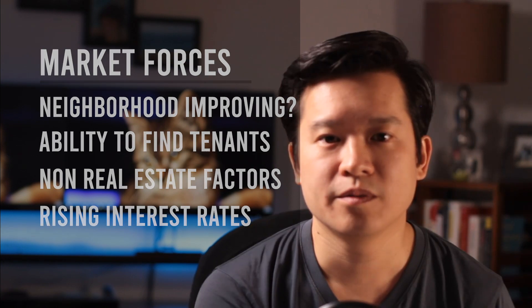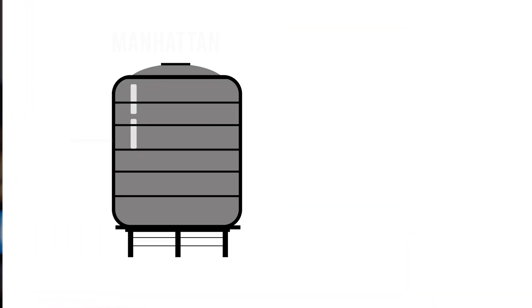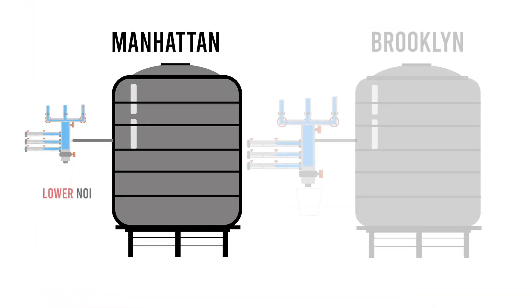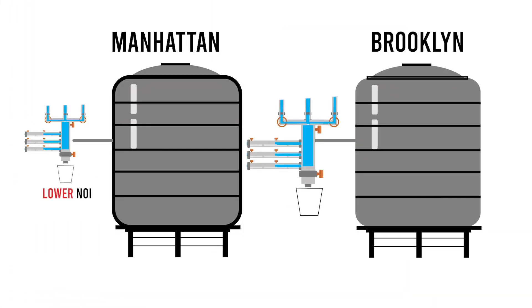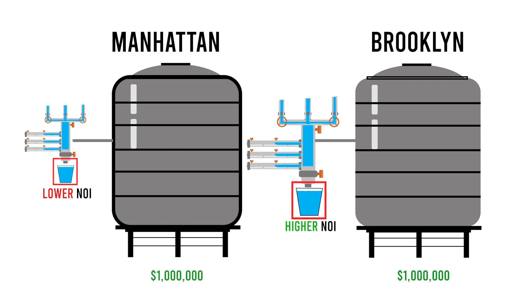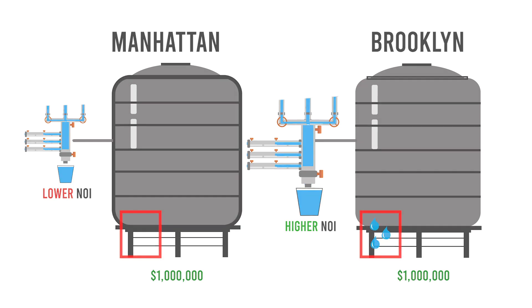For example, Manhattan trades at lower cap rates than the outer boroughs like Brooklyn. That means $1 million invested in Manhattan gets you less NOI than $1 million invested in Brooklyn. But that's because Manhattan has historically been a safer investment — it retains its value and appreciates more. Back to the analogy, water tanks in Manhattan tend to be more leak-proof.